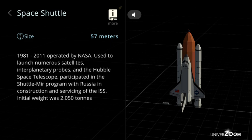Space Shuttle, size: 57 meters. 1981-2011 operated by NASA. Used to launch numerous satellites, interplanetary probes, and the Hubble Space Telescope, participated in the Shuttle-Mir program with Russia in construction and servicing of the ISS. Initial weight was 2,050 tons.